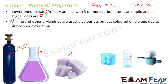Aniline and other arylamines are generally colourless. But they get coloured due to atmospheric oxidation. Please note — they are generally colourless but due to atmospheric oxidation they get some colour.